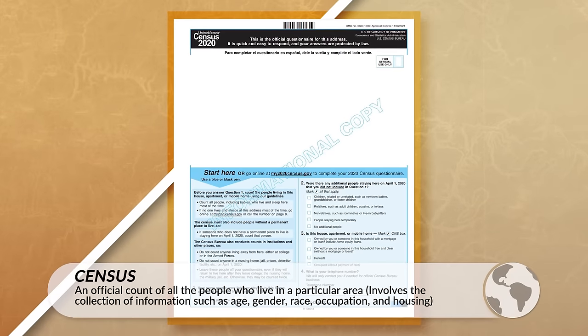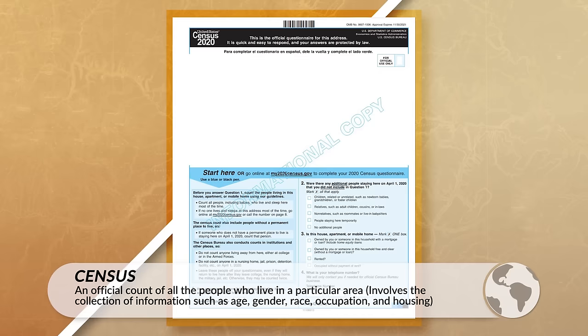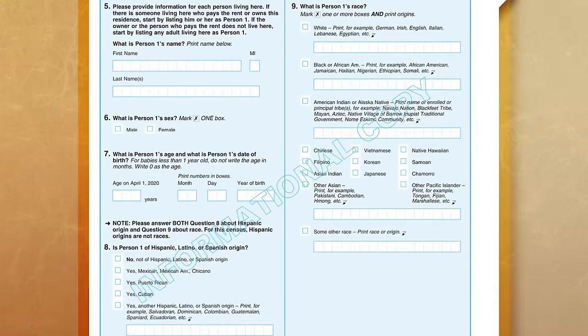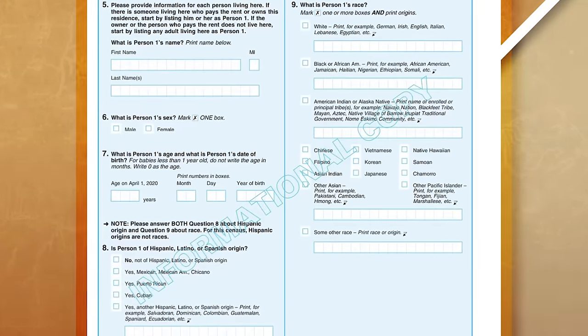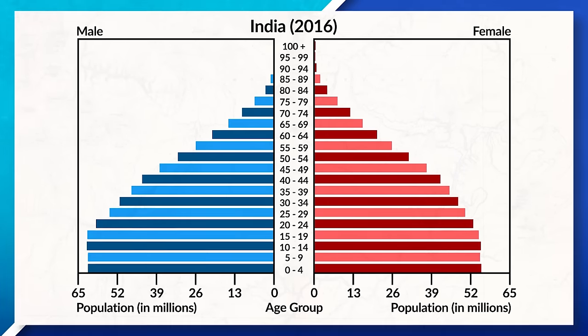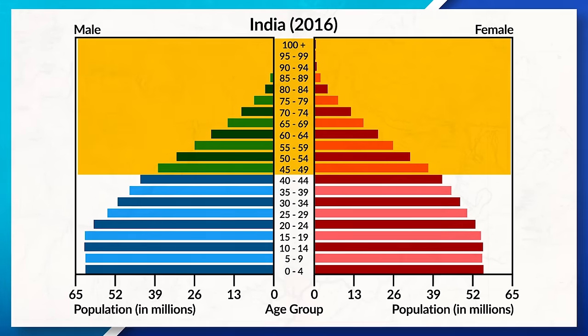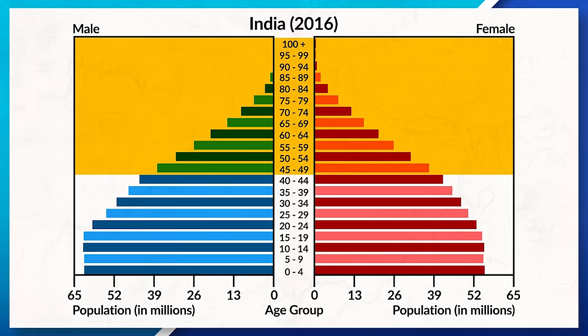Quantitative data may be collected by a country's census, which is an official count of a population that includes a variety of demographic data such as age, education level, housing status, and sex. An example of this data would be the demographic breakdown of India, where we could look at the population pyramid to better understand how many people are in each age cohort. If you need more help practicing qualitative and quantitative data, you can find exclusive videos and resources in the Ultimate Review Packet.